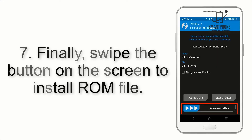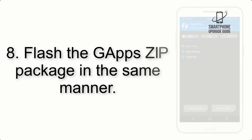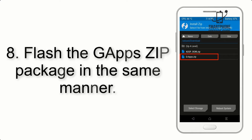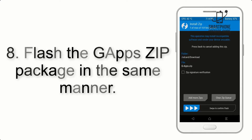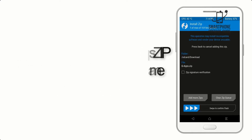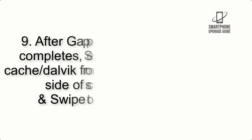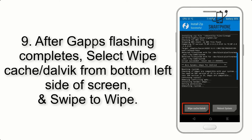Step 7: Swipe the button on the screen to install the ROM file. Step 8: Flash the GApps zip package in the same manner.